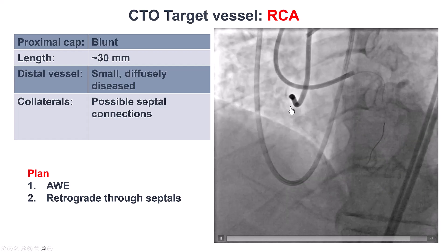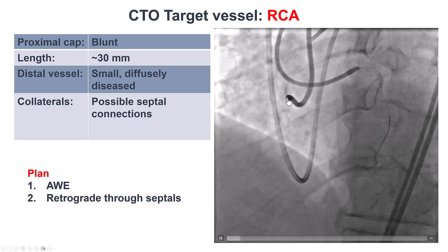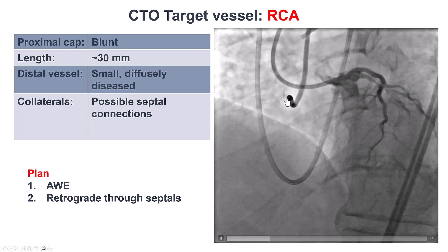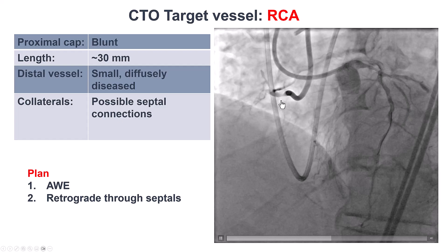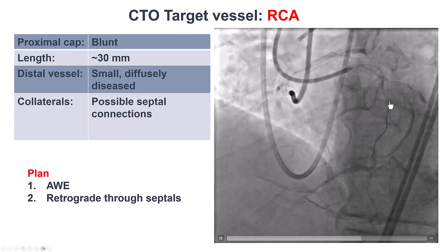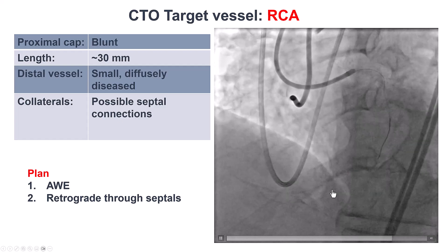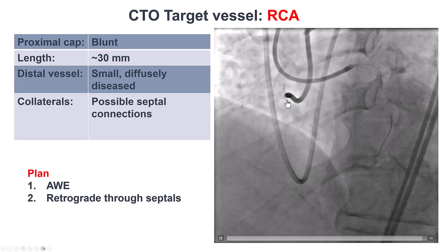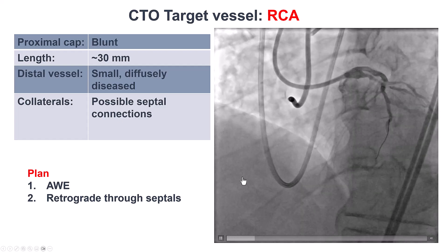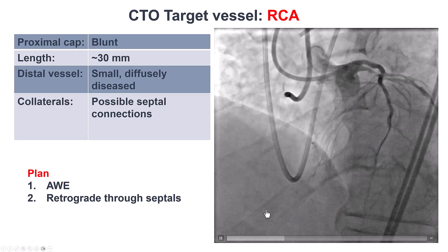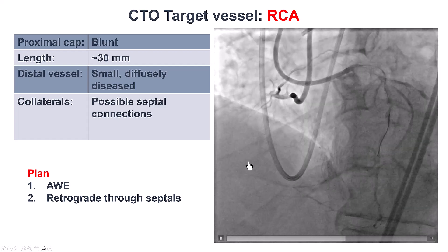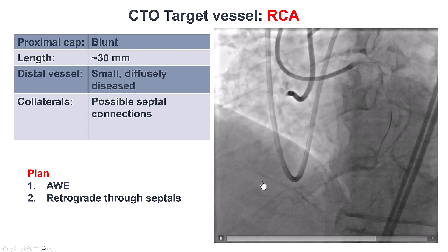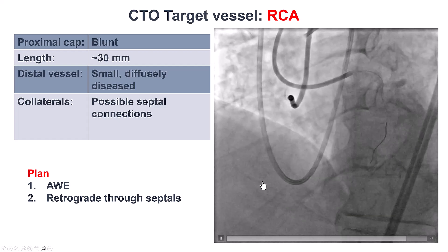The plan was to first try antegrade wire escalation, and if that didn't work, try to go retrograde through septals. ADR was less favorable here because of the small, diffusely diseased distal vessel.